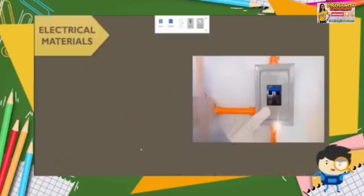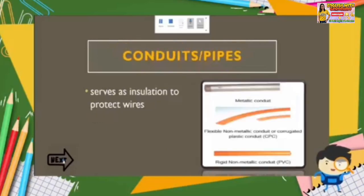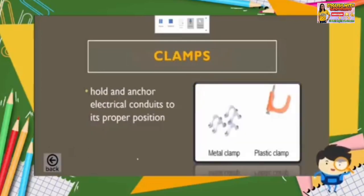So that is the difference. Next we have electric wire or conductor. Electric wire or conductor is inserted into the conduits or pipes because conduits and pipes serve as insulation to protect the wires. Conduits and pipes are connected with the use of connectors, which are used to attach conduits to the junction or utility boxes. Lastly, we have clamps — which hold and anchor electrical conduits to their proper position.